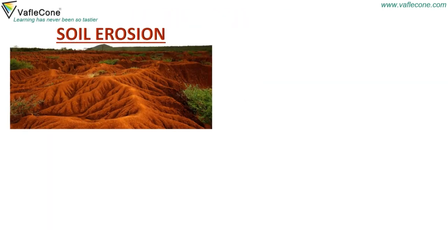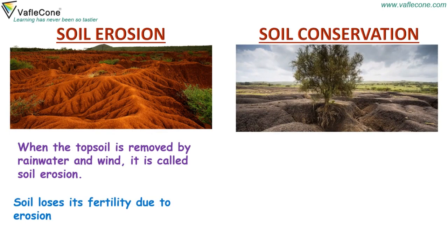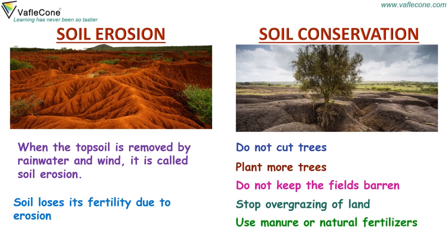Soil erosion. When the top soil is removed by rain water and wind, it is called soil erosion. Soil loses its fertility due to erosion. Following are the steps to conserve soil: first, do not cut trees; second, plant more trees; third, do not keep the fields barren; fourth, stop overgrazing of land; and fifth, use manure or natural fertilizers.